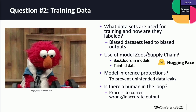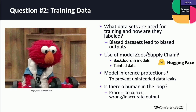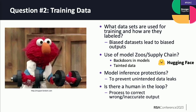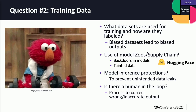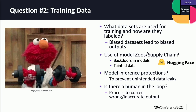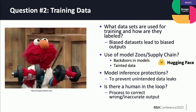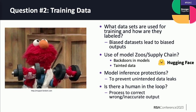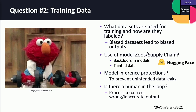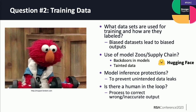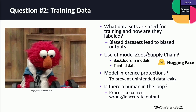Things like those model zoos — one of the most well-known is Hugging Face. I'm not saying don't use zoos; they're a wonderful collaboration research tool. Just be careful, and if you're buying from a vendor, ask if they're being careful to avoid backdoors or tainted data. And then model inference — being able to extract information from a model you shouldn't necessarily be able to see. Ask them what they're doing to make sure data is protected and access to your API is protected.